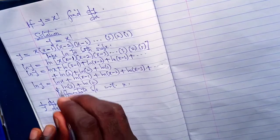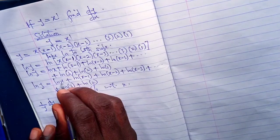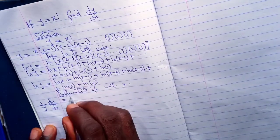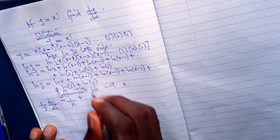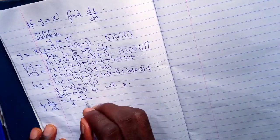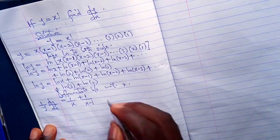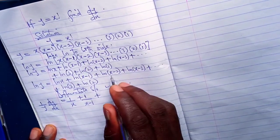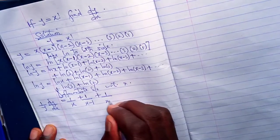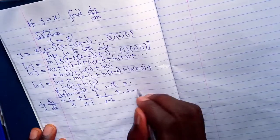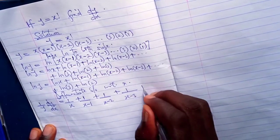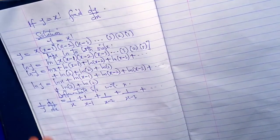This is equal to: differentiate ln x is 1 over x, plus differentiate ln of x minus 1 is 1 over x minus 1, plus ln of x minus 2 is 1 over x minus 2, plus 1 over x minus 3, plus dot dot dot. All these are constants, so they become 0.